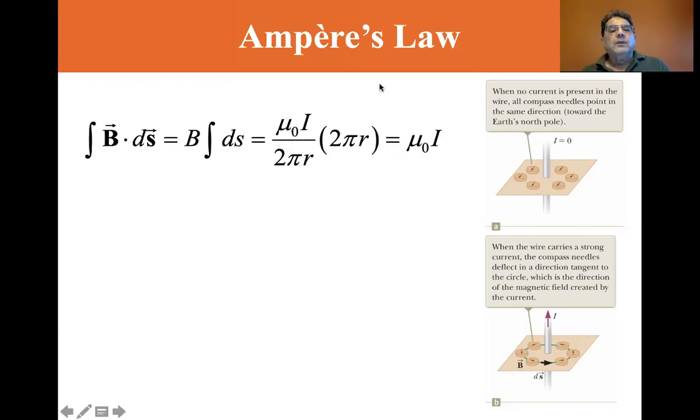So the integral of B dot ds is equal to B times the integral of ds, which is B is mu sub zero i divided by two pi r and the integral of ds is two pi r. If you take it where s is that little segment that encloses all those compass points, it's the circumference of a circle, two pi r. And you'll see that the two pi r's cancel and you end up with mu zero times i.